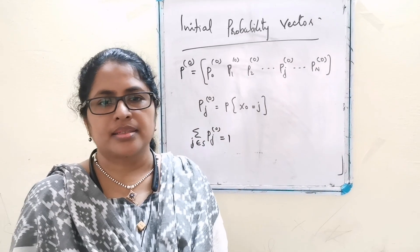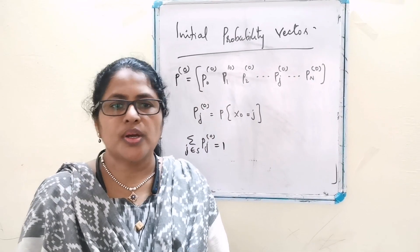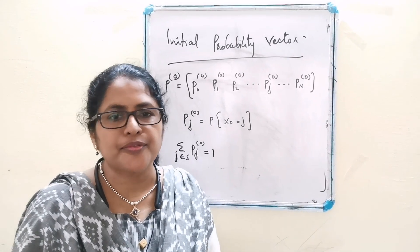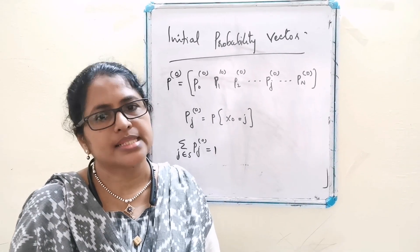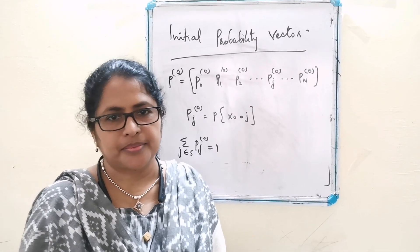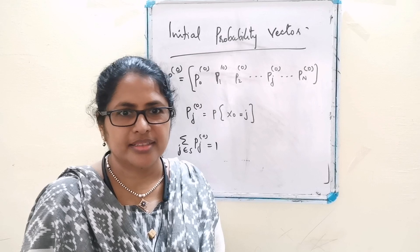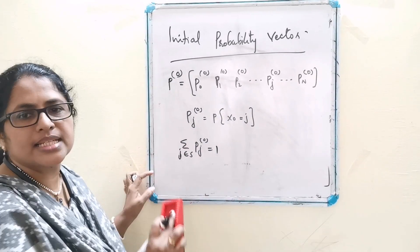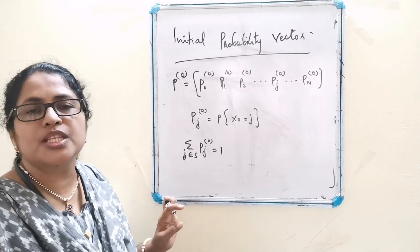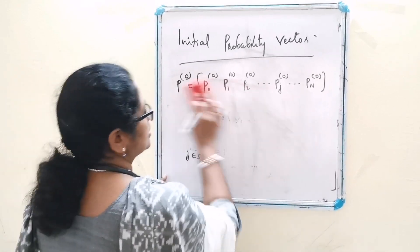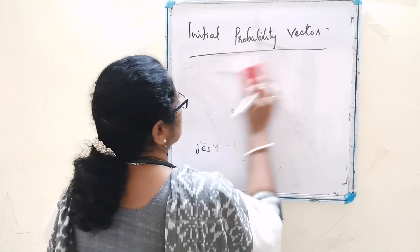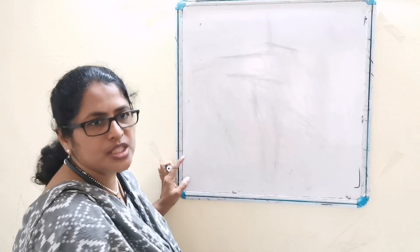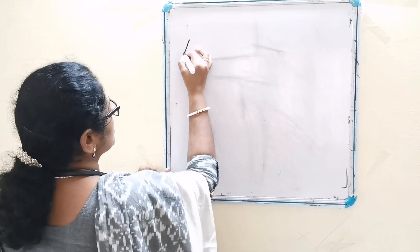This holds since it is sure that the system will start from any one of the possible states. Next we have to consider absolute probabilities.